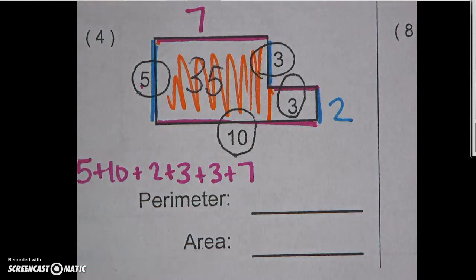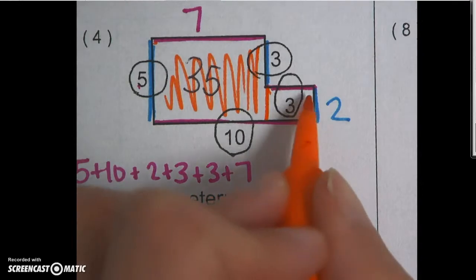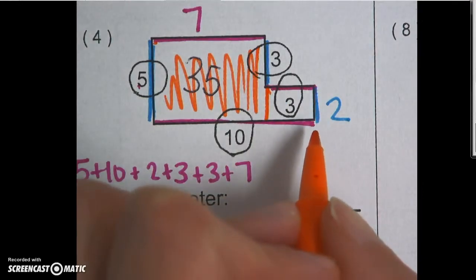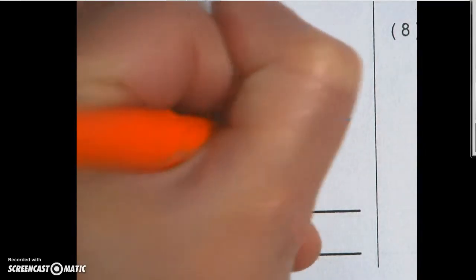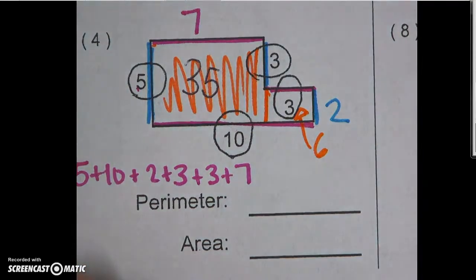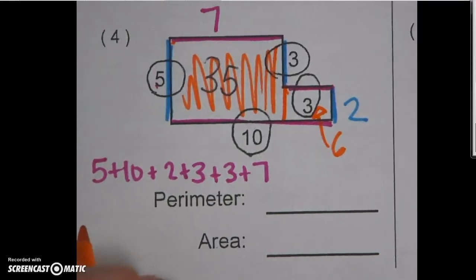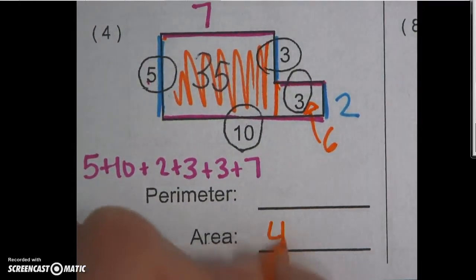And then my white rectangle over here has a width of 3 and a length of 2. So 3 times 2, this part in here is 6. So to find my total area now, I'm just going to add. 35 plus 6 gives me 41.